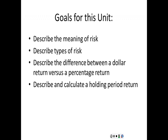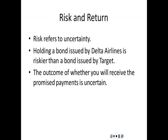Our goal for this unit is to describe the meaning of risk and some of the types of risk. Our first goal is to describe what a return is and understand what we're doing with this risk and reward idea. To quickly define risk: it refers to uncertainty. In a finance context, it's the chance you don't get a payment or cash flow that you expect, or the chance a stock might not return what you expect.